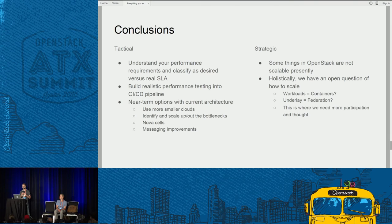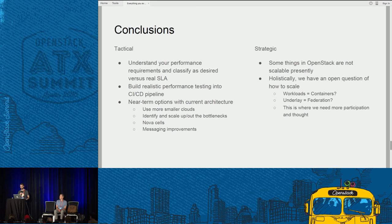If you want to have an easy time deploying OpenStack at scale right now, your option is kind of to use small clouds. Nova Cells could help, but you need a team for that. You need to learn to identify your bottlenecks, learn to troubleshoot OpenStack, and learn what the troublesome components are — MySQL and RabbitMQ. But we see improvements coming: Nova Cells v2 is coming, that's really exciting, and the messaging improvements I already mentioned.